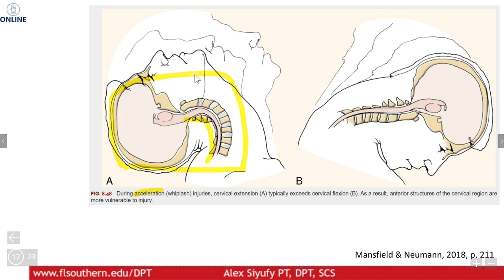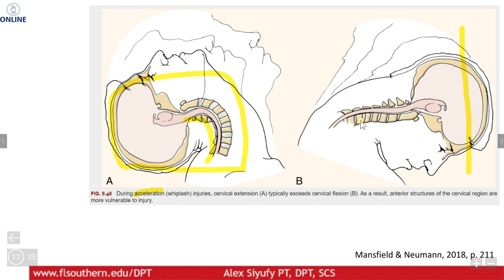But if extension is limited by the headrest, that means flexion occurs more quickly — so depending on how the headrest is set up, we might now see more flexion injury. In most modern vehicles there's also an airbag to limit flexion. Preventing significant cervical injuries really comes down to limiting the overall motion that occurs. However, while we prevent cervical injuries with headrests and airbags, if there's a sudden shift of the brain between flexion and extension forces, the brain can be injured — so you may minimize cervical injury but increase risk of cerebral injury.